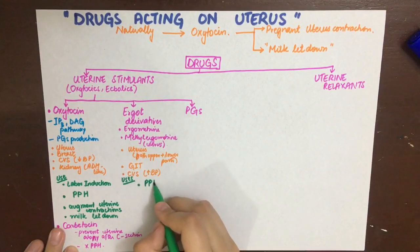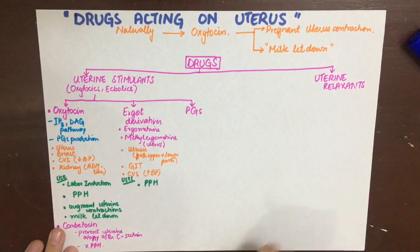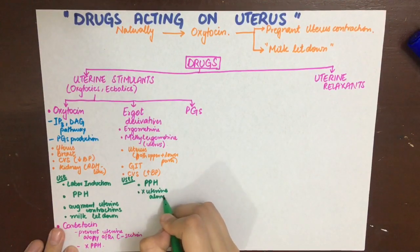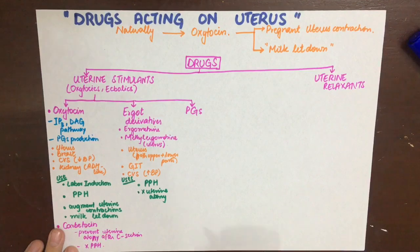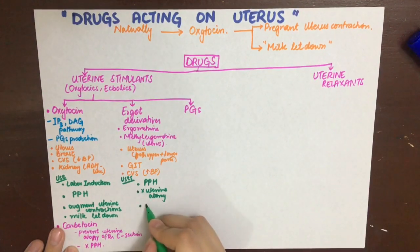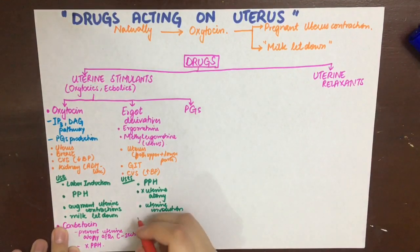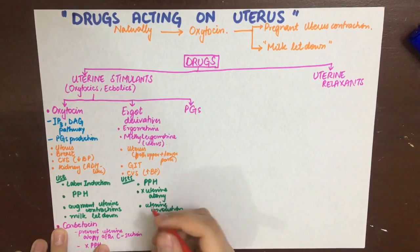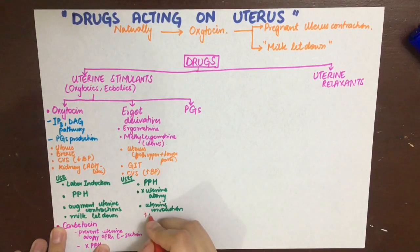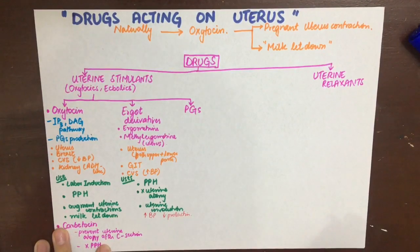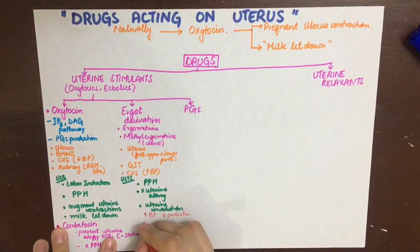Ergot derivatives can be used in postpartum hemorrhage because they contract the myometrium and stop bleeding. They can also prevent uterine atony after caesarean section and hasten involution of the uterus when it is delayed. Adverse effects include increased blood pressure due to vasoconstriction in hypertensives, and a specific effect of decreasing prolactin secretion, causing problems with lactation in the new mother.